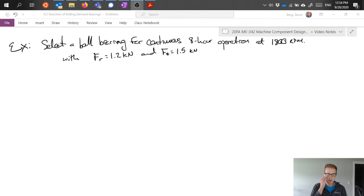The problem statement here is that we want to select an appropriate ball bearing that could be used to achieve continuous eight hours of operation per day at a rotating speed of 1800 rpm and it's going to be expected to carry a radial load of 1.2 kilonewtons and a thrust load of 1.5 kilonewtons.